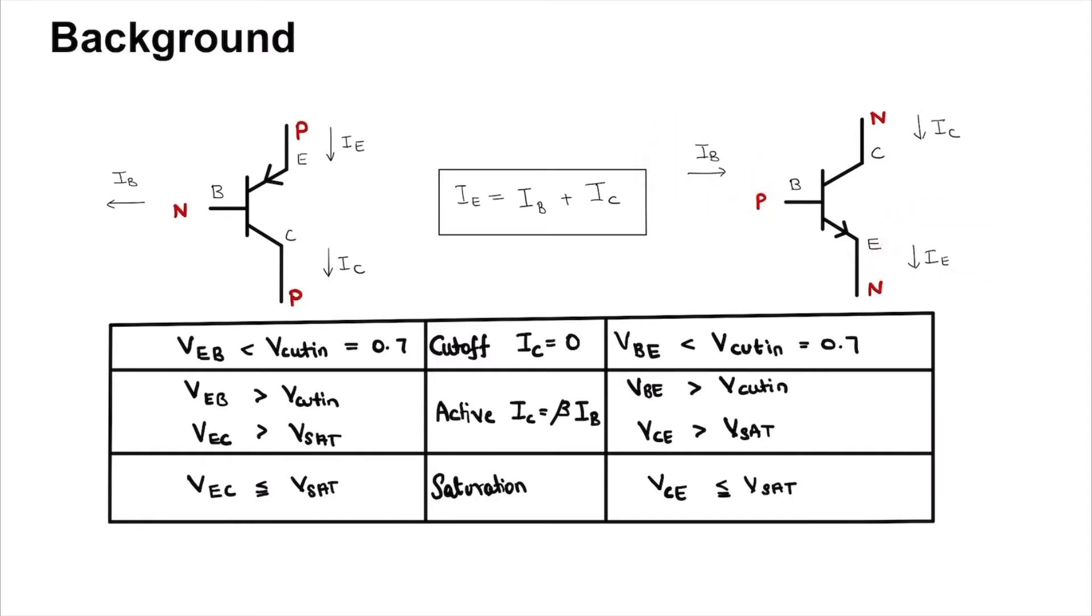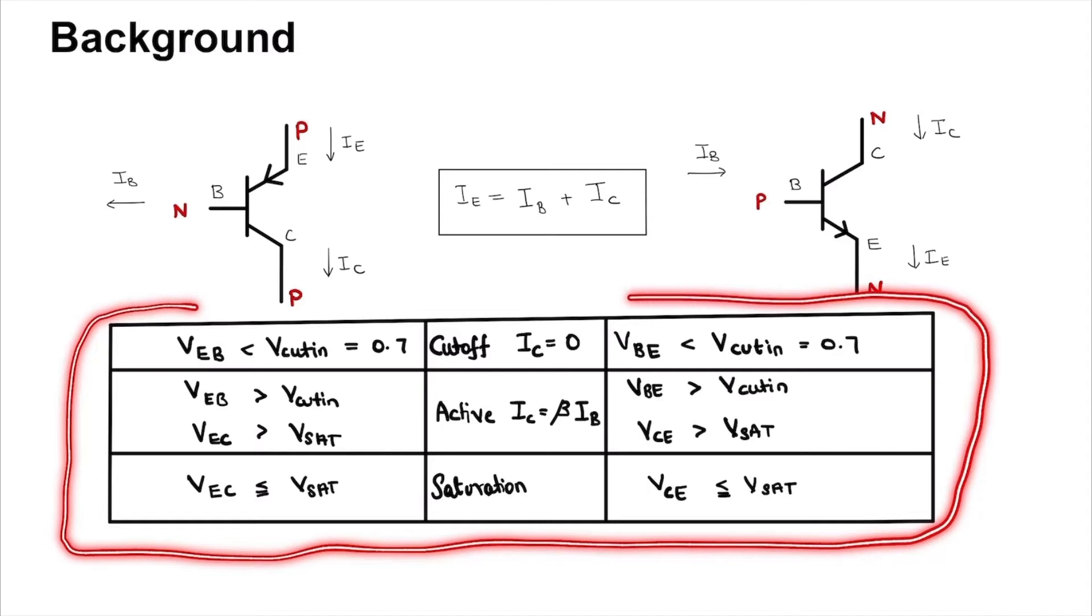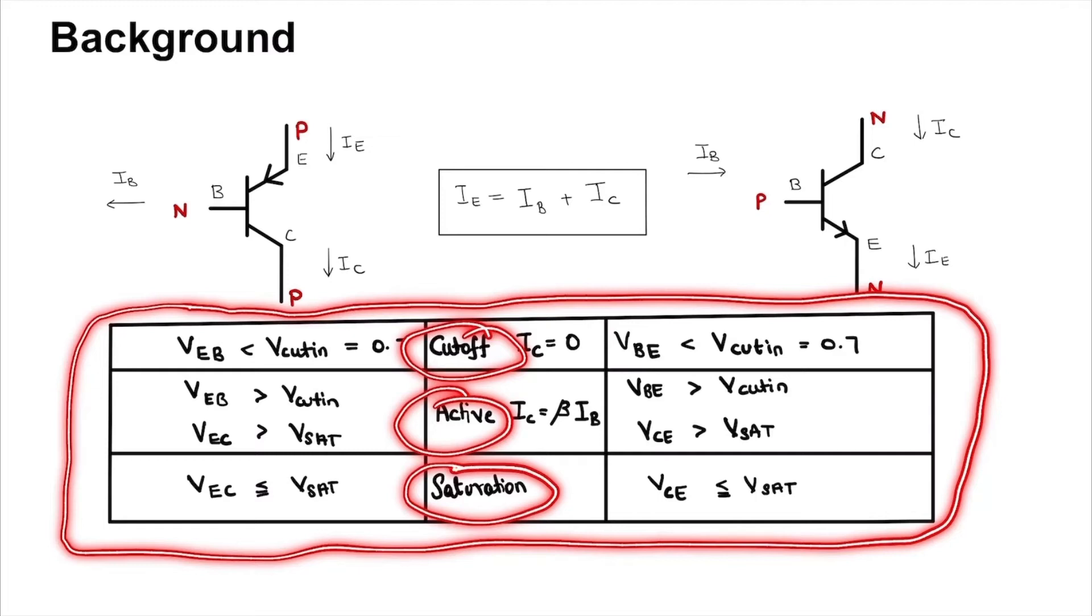For both transistors, IE equals IB plus IC as a consequence of KCL. And in this table you will see listed the various conditions for the three regions: cutoff, active, and saturation.